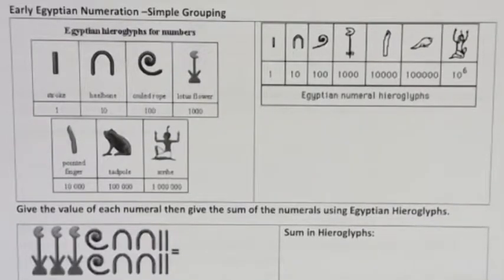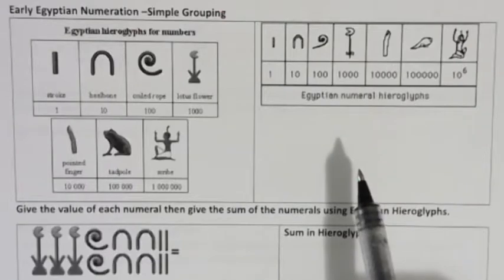Hi, it's Carly McEvoy. I want to talk about the Egyptian numeration system. And this is a simple grouping system.